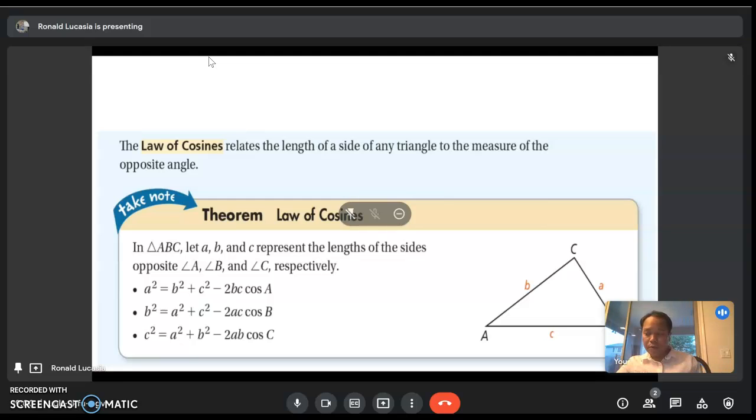If you know the measures of enough parts of a triangle to completely determine the triangle, you can solve the triangle using the Law of Cosines.